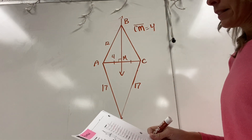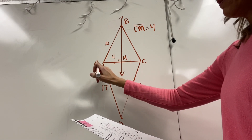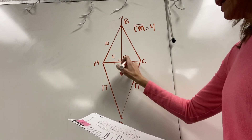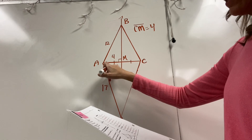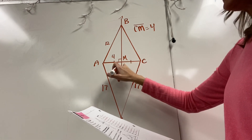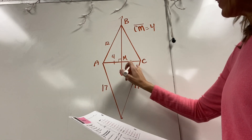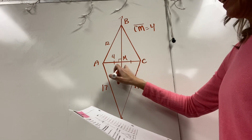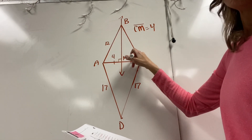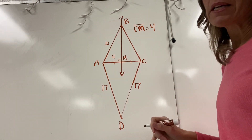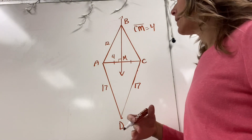Next one: again, it tells us that line BM is perpendicular to segment AC, and that segment AM is congruent to segment CM. It says find BC. So your perpendicular bisector theorem — you want to go back and look into your geometry sketchbook at that one.